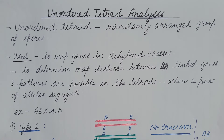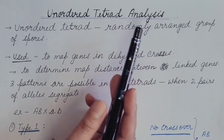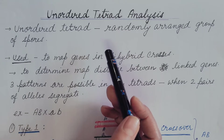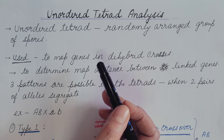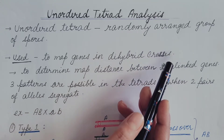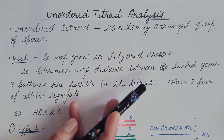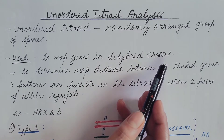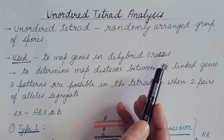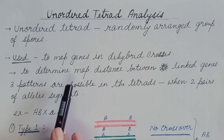In the previous video we discussed about ordered tetrad analysis, and today we are going to discuss about unordered tetrad analysis. In unordered tetrads, the spores are randomly arranged — the ascus provides enough space so spores can move randomly. An example is Saccharomyces cerevisiae. It is used to map genes in dihybrid crosses, which involve two genes or two loci.